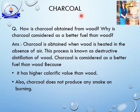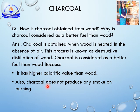Boards frequently ask: what is charcoal and how is it obtained from wood? Charcoal is obtained when wood is heated in the absence of air — a process known as destructive distillation of wood. Charcoal is considered a better fuel than wood because it has a higher calorific value and does not produce smoke on burning. With this we have completed the chapter on sources of energy. Questions will be given later for your FAIR notebook. Thank you students.